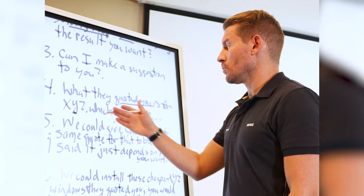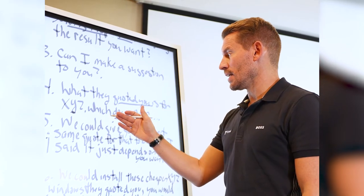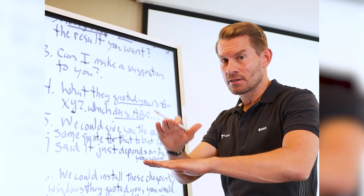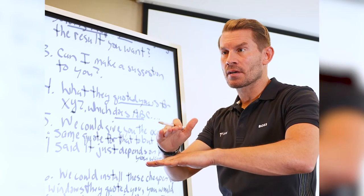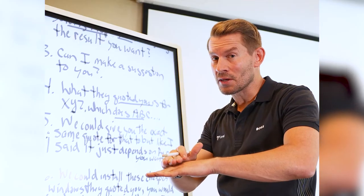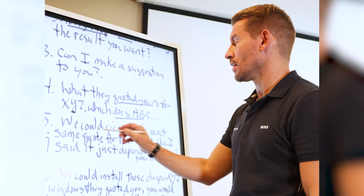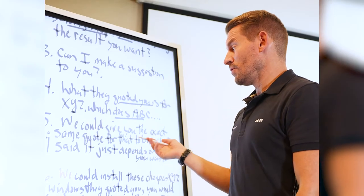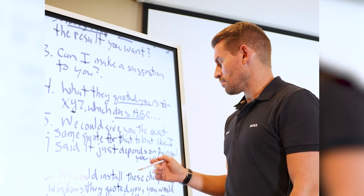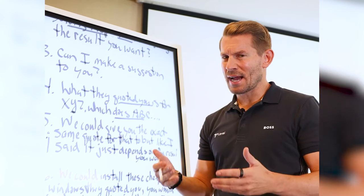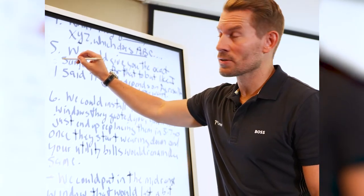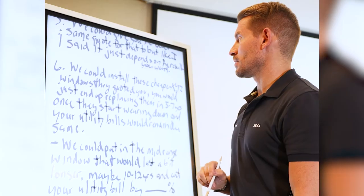So: 'What they quoted you is for X, Y, Z, which only does A, B, and C.' Now you're getting them to think: maybe the company that gave me a cheaper quote is not going to give me the result I really want. That seeds doubt in their mind. Then you agree: 'We could give you the exact same quote for that too. But it just depends on the type of result that you want.' And again — results-based thinking over price-based thinking.